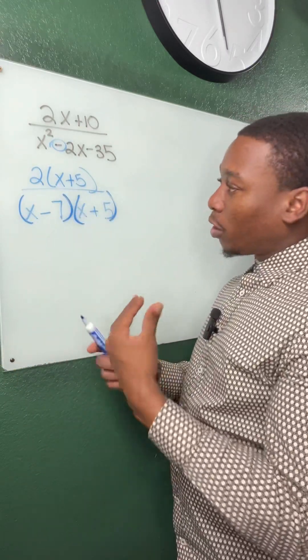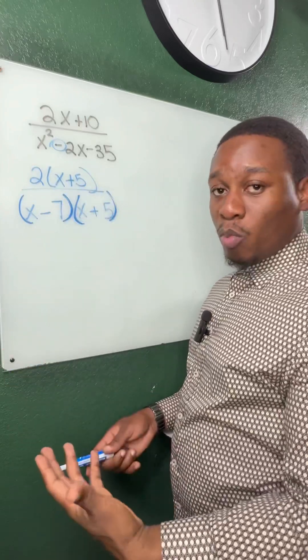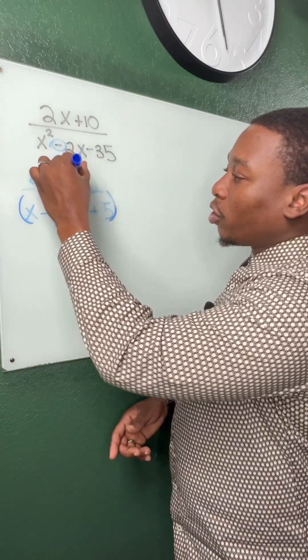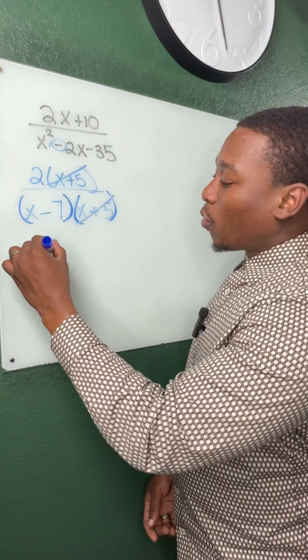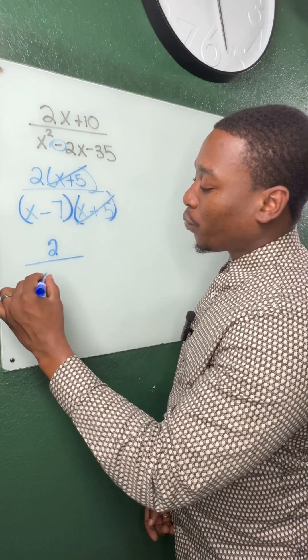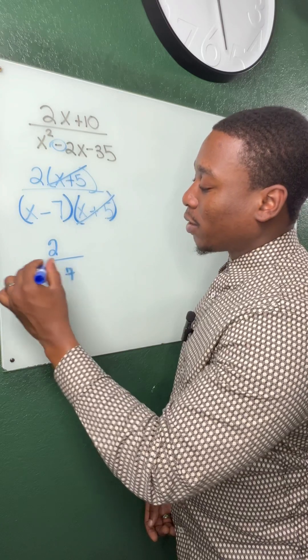Now at this step, we're done factoring top and bottom, numerator and denominator. We can now use properties of fractions and cancel out common terms, x plus 5. So now what we're left with is 2 divided by x minus 7.